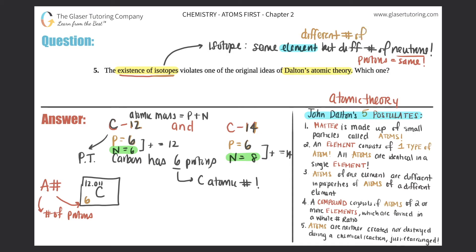...in your element, right? So isotopes exist because there are a different number of atoms for an element because there's different number of neutrons. So which one does that violate as far as Dalton's five postulates? It would be the one that talks about elements. So this one is all about number two, and number two, Dalton's postulate says that an element consists of only one type of atom and all atoms are identical in a single element.